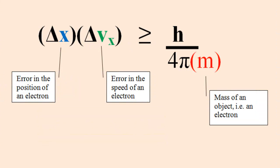I'll begin my explanation by showing you what I think are the key features to this inequality. On the left, there's delta x, which is the amount of error in the position of the electron, and delta v, which is the error in the speed of the electron.